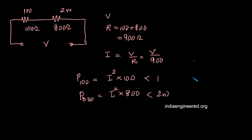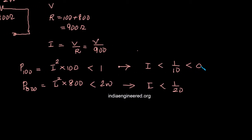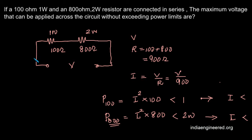From the condition for the 100 ohm resistor, taking the square root, I should be less than 1/10, which is 0.1 amps. From the condition for the 800 ohm resistor, I should be less than 1/20, which is 0.05 amps. The stricter condition is on the 800 ohm resistance, meaning the current through the circuit should not exceed 0.05 amps.